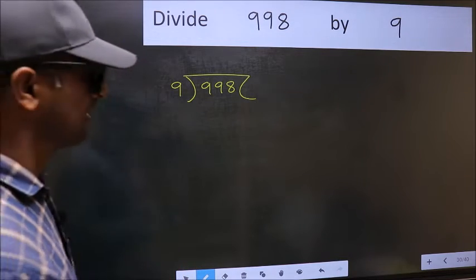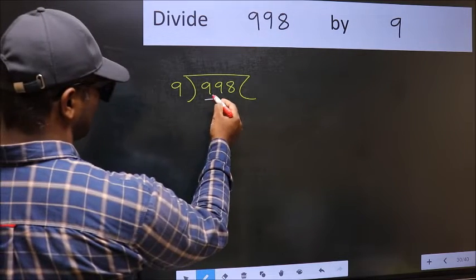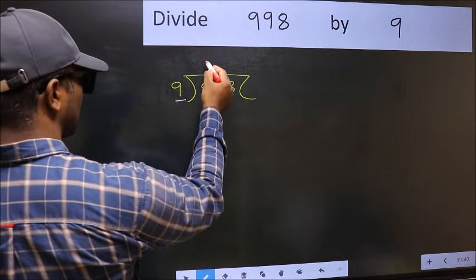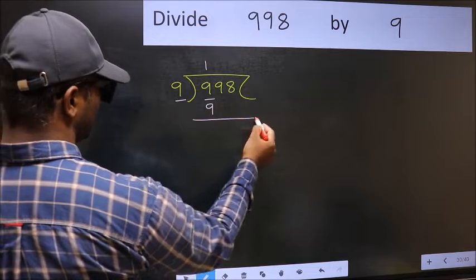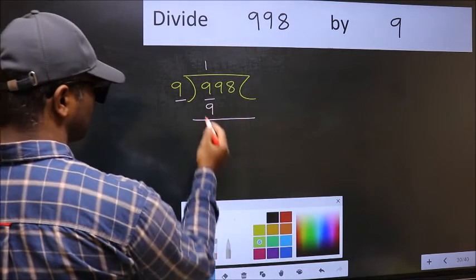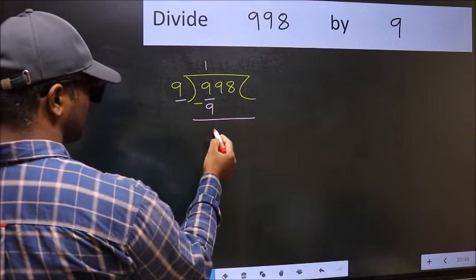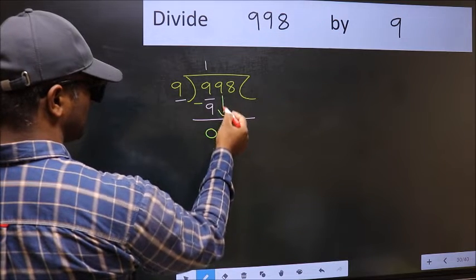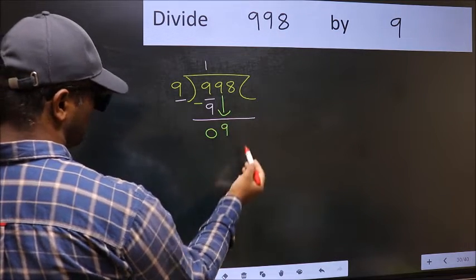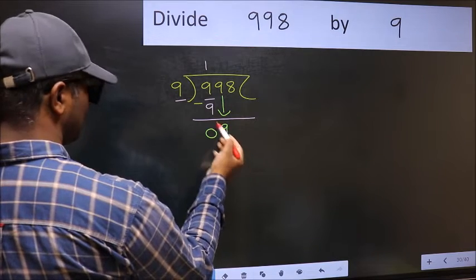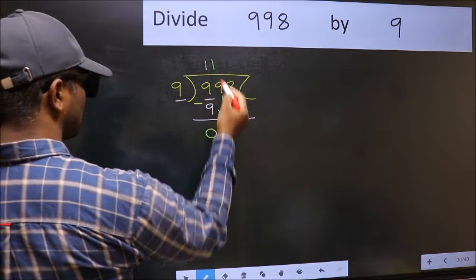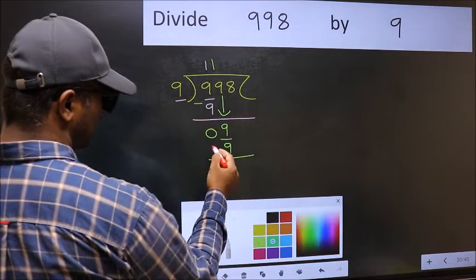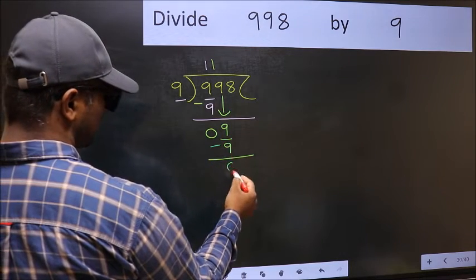Next. Here we have 9 and here also 9. When do we get 9 in 9 table? 9 once 9. Now you should subtract. 9 minus 9, 0. After this, bring down the beside number. So 9 down. Now 9. When do we get 9 in 9 table? 9 once 9. Now you should subtract. 9 minus 9, 0.